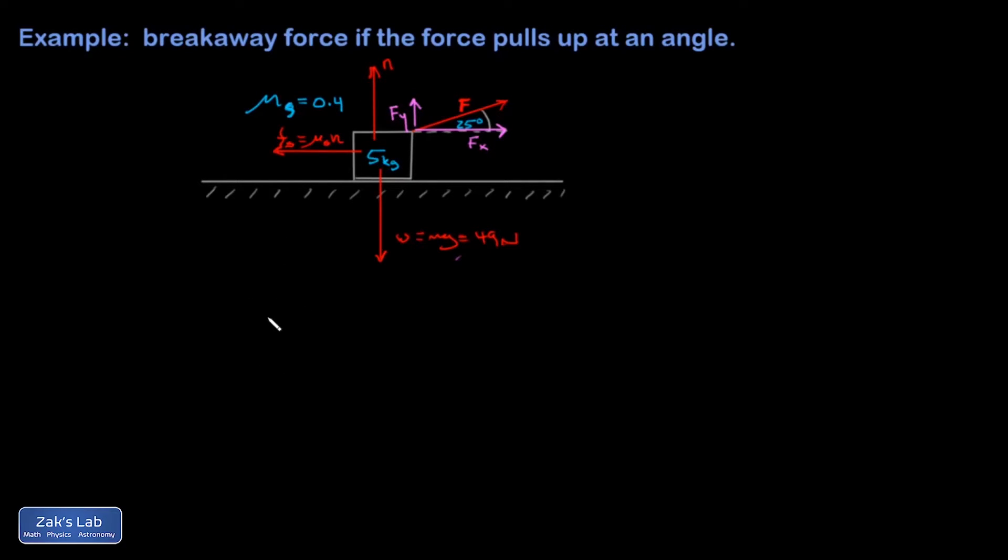So in my vertical direction, my y analysis, my upward forces are N plus the y component of the applied force, so that would be F sine 25 degrees, and that's equal to the downward force 49 newtons.